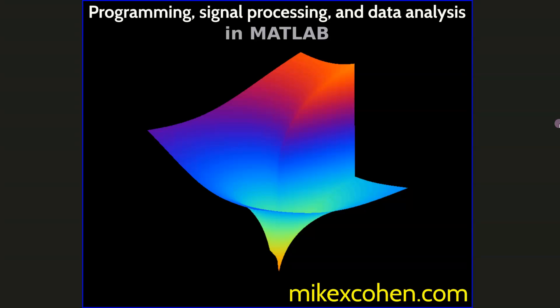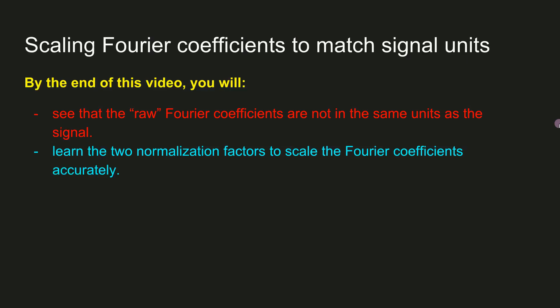Usually in the Fourier transform, you want to be able to relate the power spectrum directly back to the signal you measured, which means you need to have the results of the Fourier transform in the same units as the original signal. But this is not natively the case, and the purpose of this video is to show you the two normalization factors that you need to include in the Fourier transform in order to have the results be in the same units as the original signal.